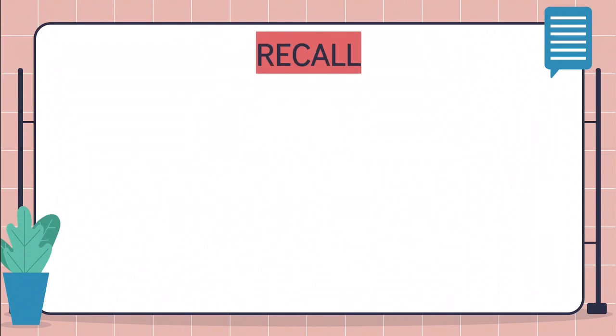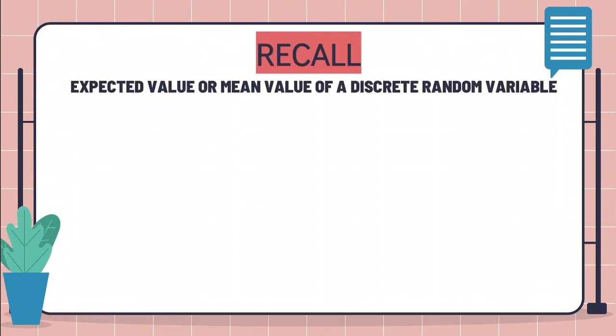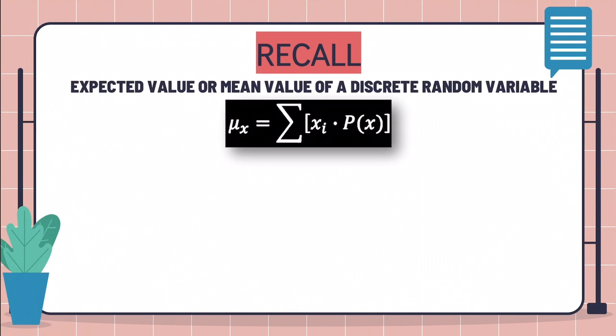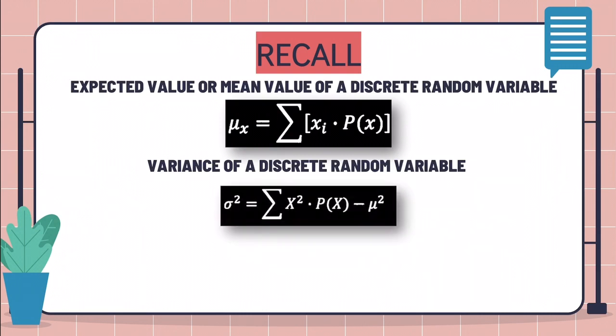Let's start by recalling the formulas we learned from the previous topics. To find the expected value or mean value of a discrete random variable, we should be using this formula. However, in finding the variance of a discrete random variable, we are using this formula.